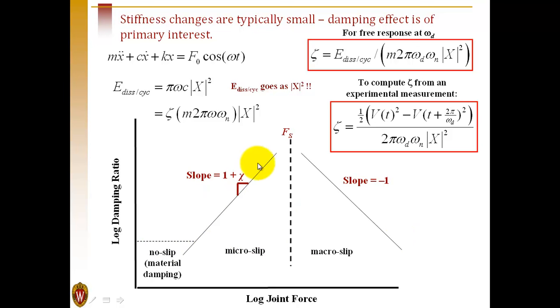Power law behavior will manifest itself as a slope of 1 plus chi in the micro-slip regime, and we can also see macro-slip behavior.